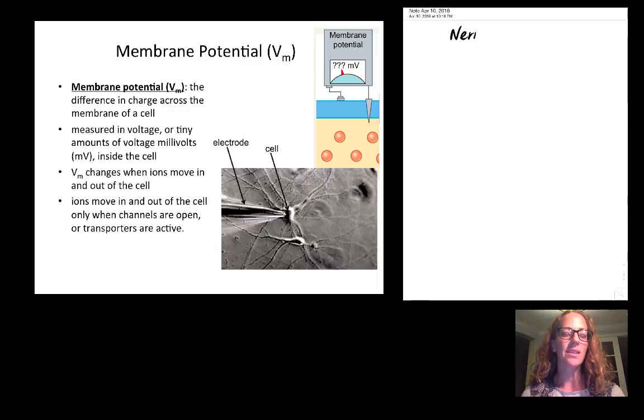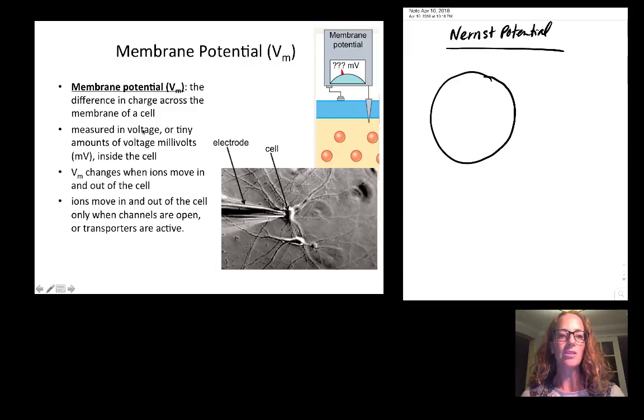Any cell that has electrical charge or a difference in electrical charge across the membrane has something called a membrane potential. This is measured in voltage or because the cells are so tiny, tiny amounts of voltage which are millivolts, or one one-thousandth of a volt.